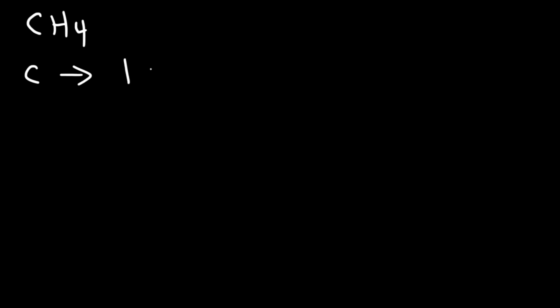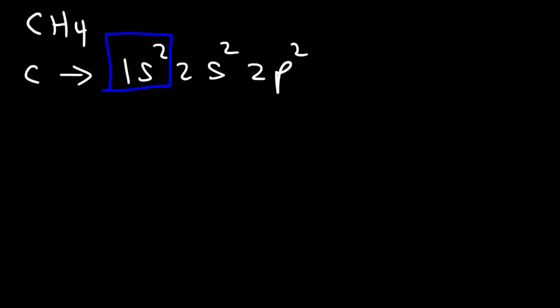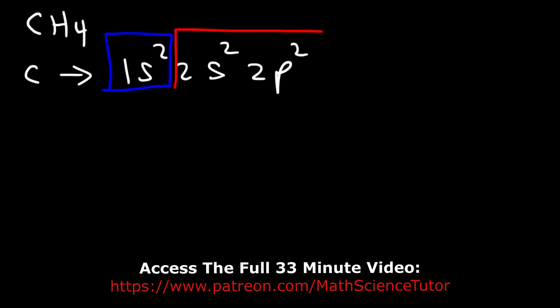Now, when carbon mixes with hydrogen to create methane, carbon has to hybridize its atomic orbitals to create hybrid atomic orbitals. The electron configuration of carbon is 1s2 2s2 2p2. Carbon has six electrons total. Two in the first energy level are core electrons that don't participate in most chemical reactions. The other four in the highest energy level are valence electrons, and valence electrons do participate in chemical reactions.